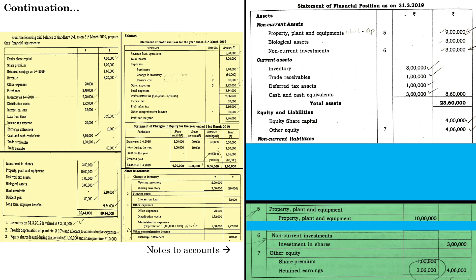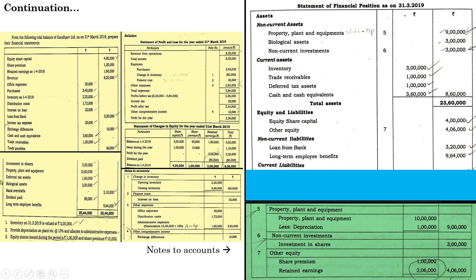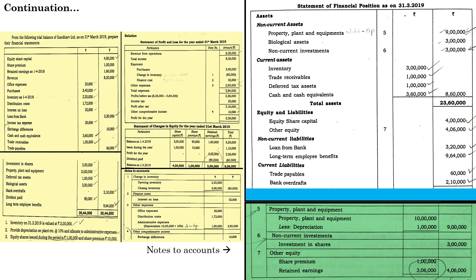Now let us go for non-current liabilities. Loan from bank: 3,20,000. Long-term employee benefit: 9,64,000. All these items come under non-current liabilities. For current liabilities: trade payable 60,000, and bank overdraft 2,10,000. Check the adjustments also whether we have skipped any item. Now take the total of the liabilities side — you will get 23,60,000. Assets and liabilities match: we get the same figure, confirming the balance sheet balances.